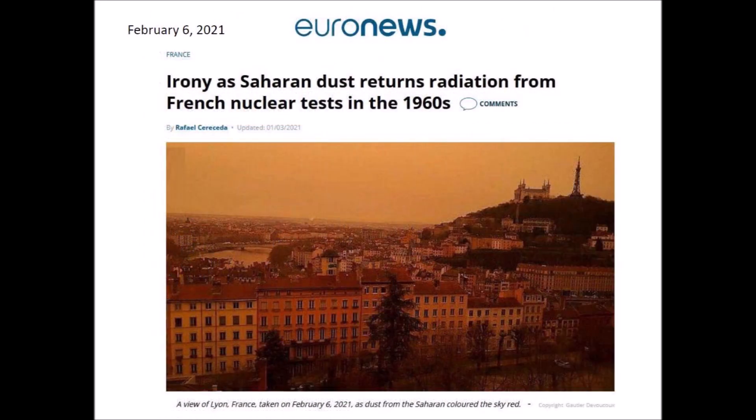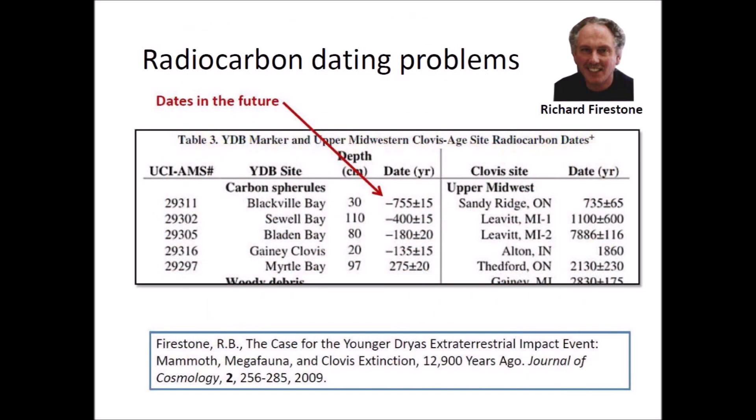France is a nuclear power like the United States. It conducted its first nuclear test in the Sahara Desert near Algeria's border with Mauritania on February 13, 1960, about 2,200 kilometers from Lyon. In a strange twist of fate, windstorms from the Sahara Desert have carried radioactive dust back to France. An image of Lyon in February 2021 shows a sky colored by red Saharan dust containing cesium-137 from the French nuclear tests. Nuclear tests by multiple nations have released radioactive isotopes that make accurate radioisotope dating difficult.